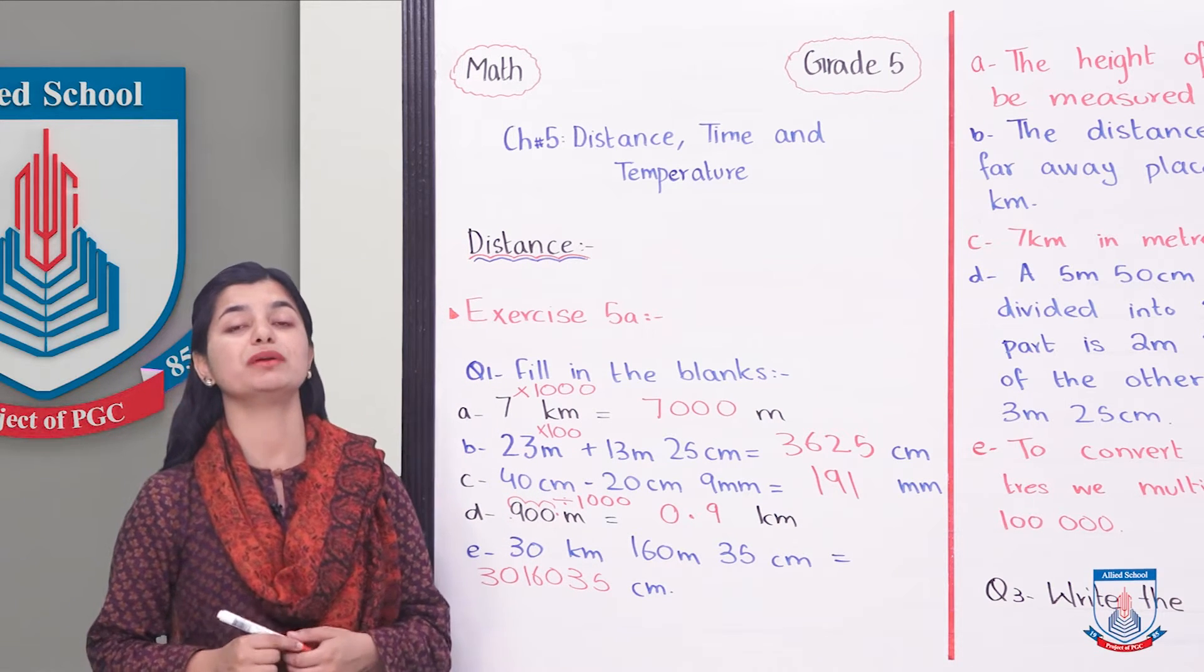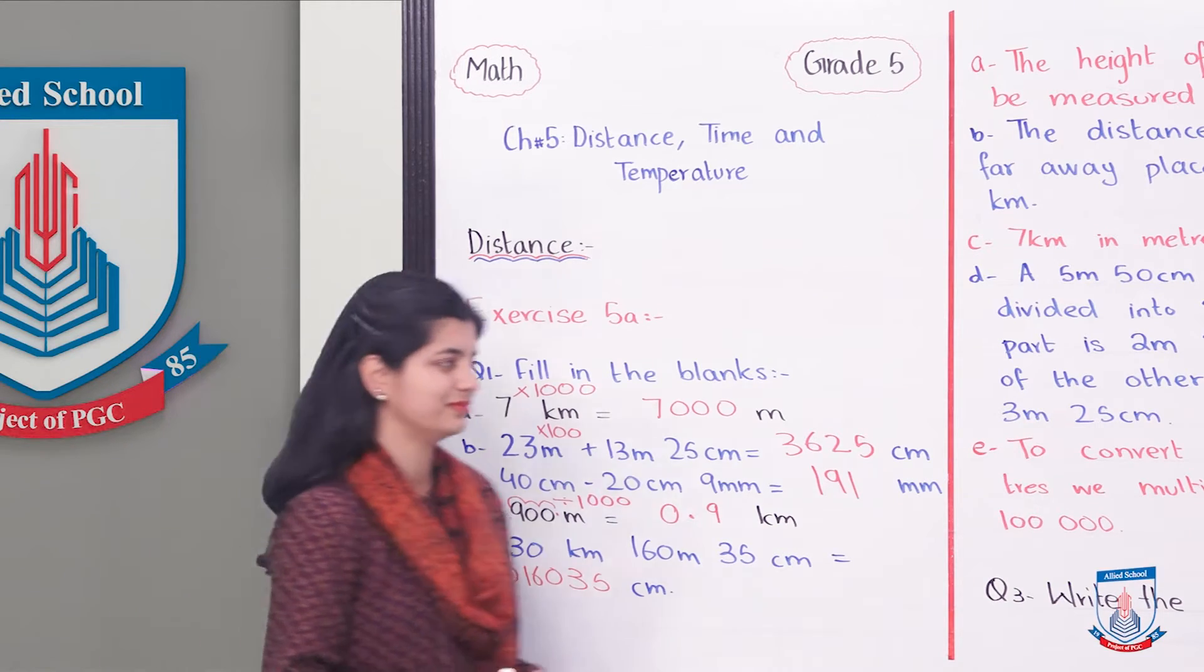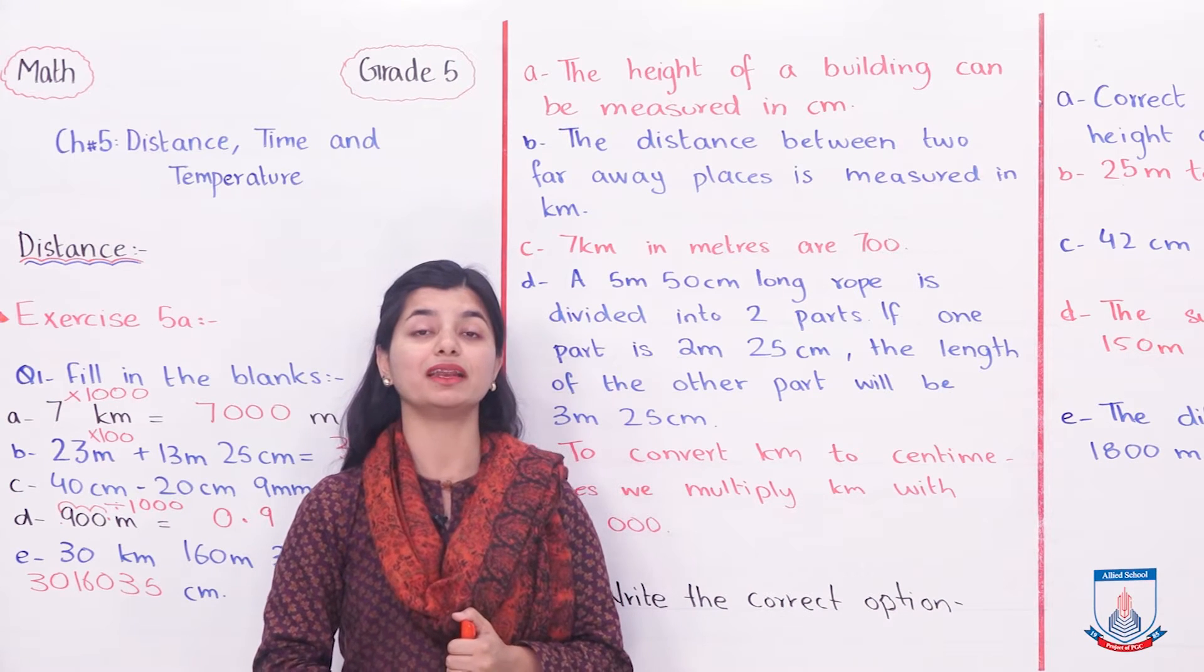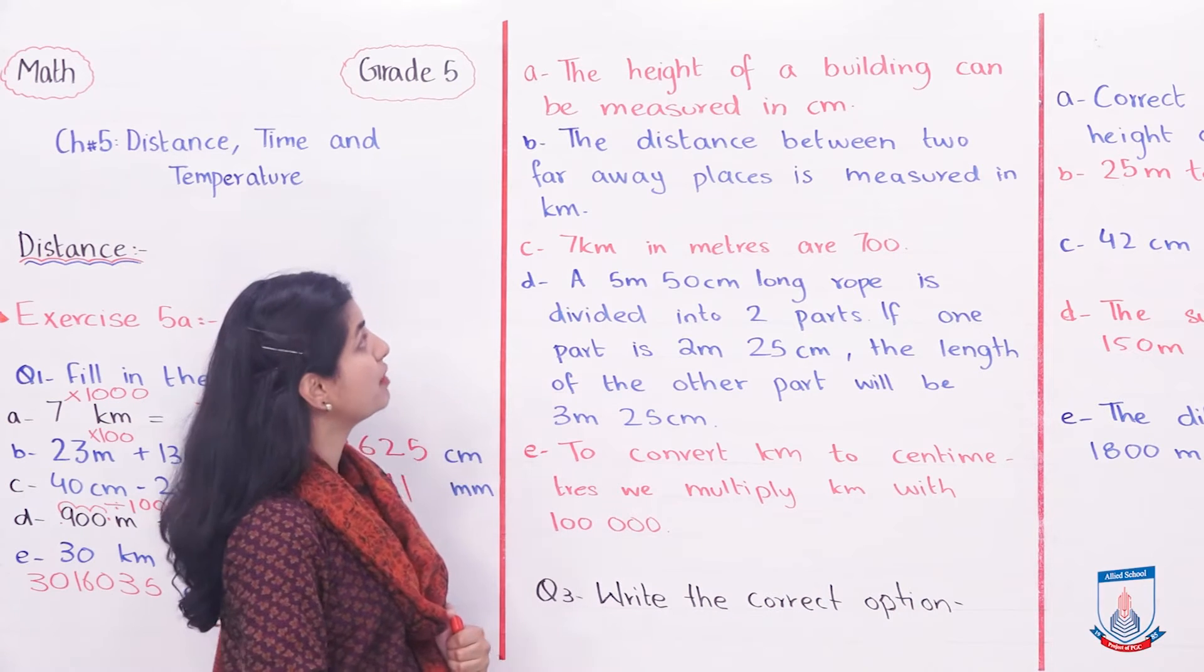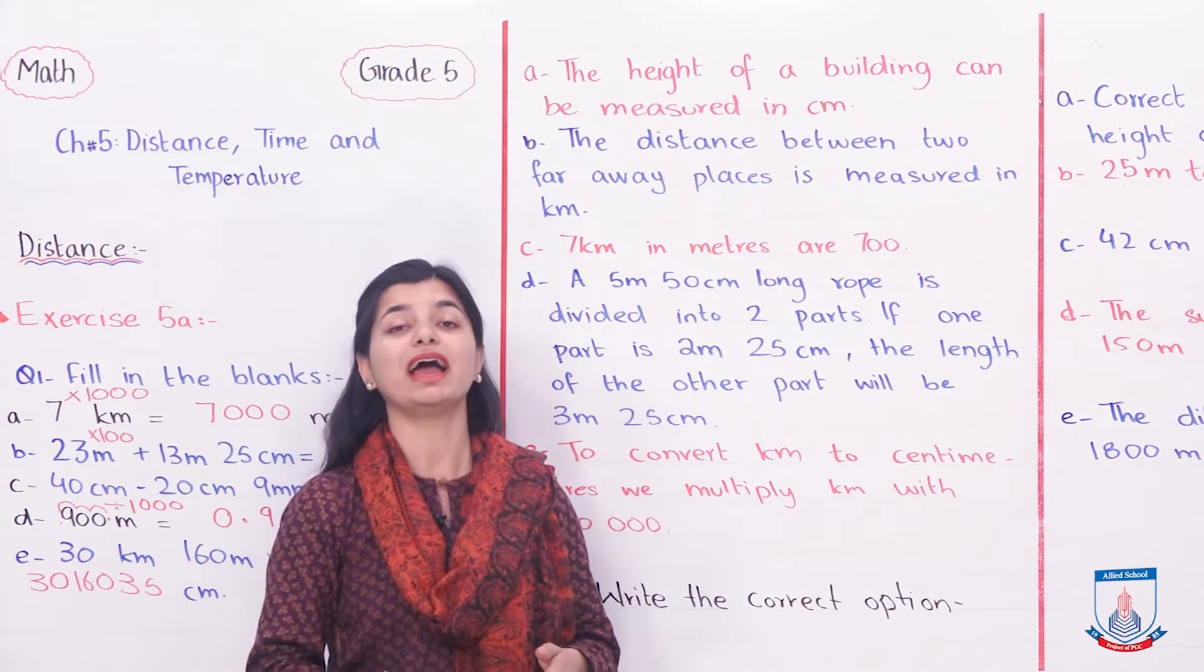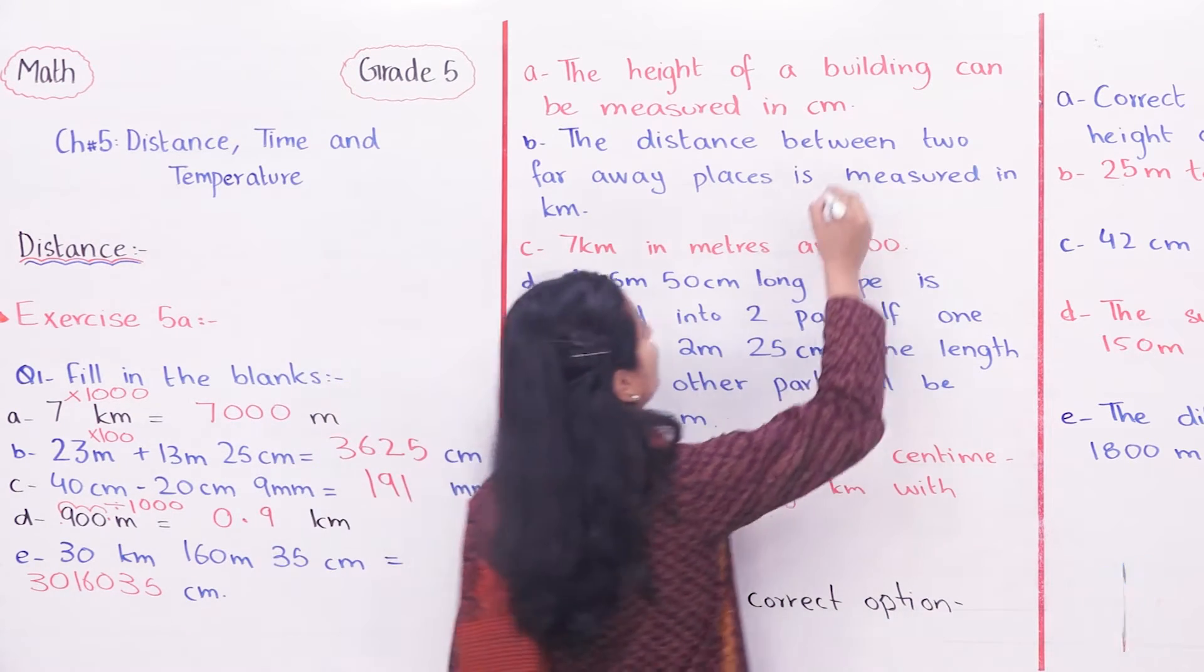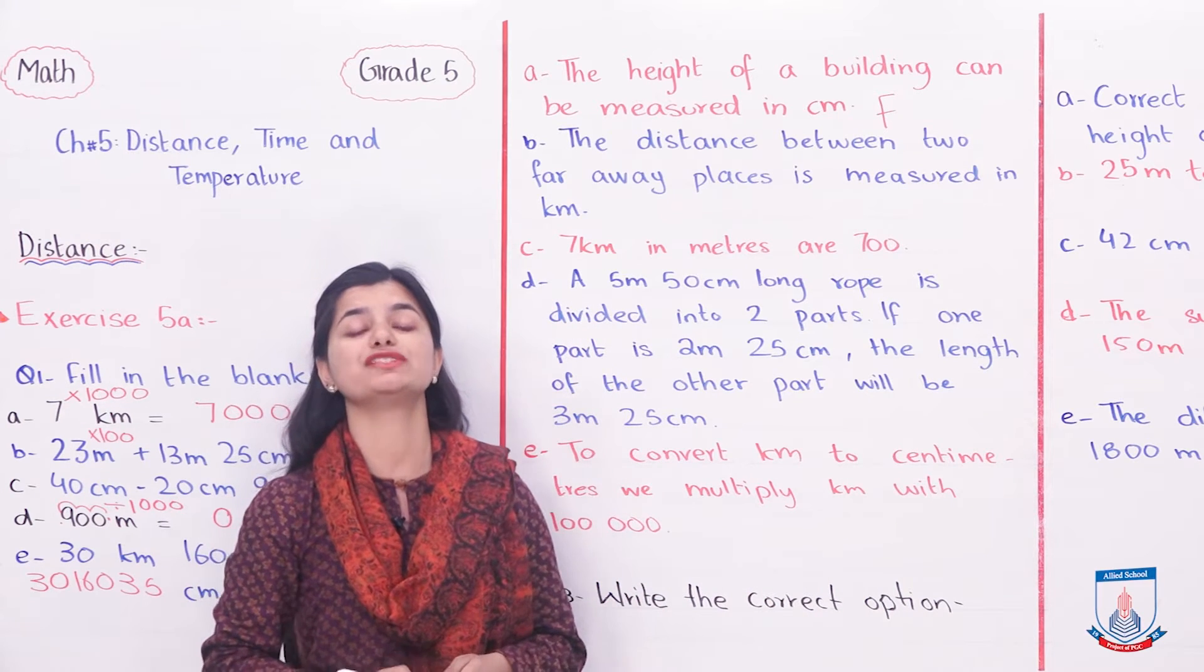Now let's look at question number 2 where we have to determine which statement is true and which is false. Part A: The height of a building can be measured in centimeter. Does a building's height get measured in centimeters? No, this is false because centimeter is just a small unit.